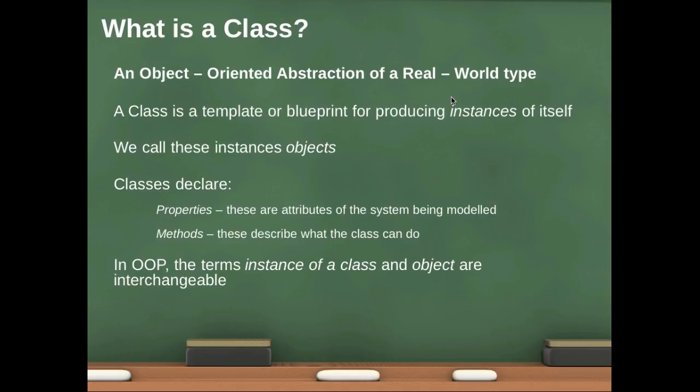Well, a class is, I have a definition here, but we'll talk about that. A class is an object-oriented abstraction of a real-world type or idea. A type can be a thing like a car, or it can be an idea like an account.